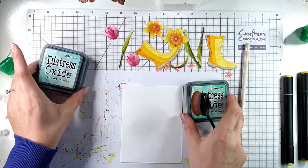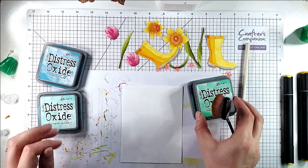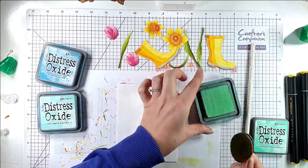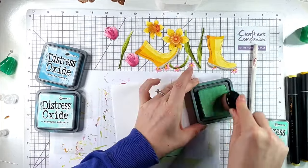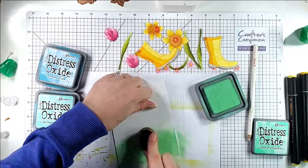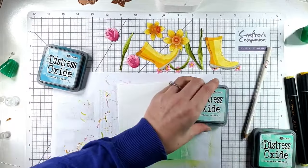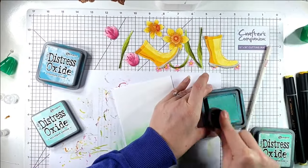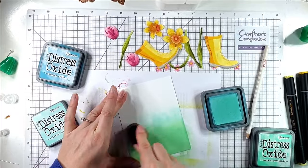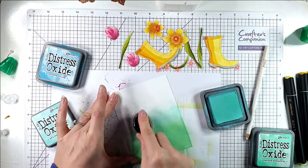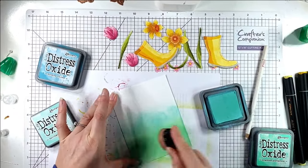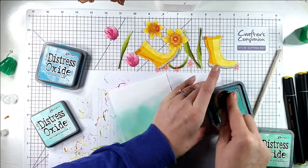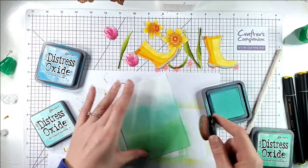Then I'm going to use Cracked Pistachio, Salvaged Patina, and Broken China to just add some color to the background. I'm going to start with the Cracked Pistachio at the bottom, then I'm going to go to Salvaged Patina. We're going to emboss this cardstock in a second and I just want quite a subtle background for this card, so I'm doing my ink blending before I've embossed the pattern.